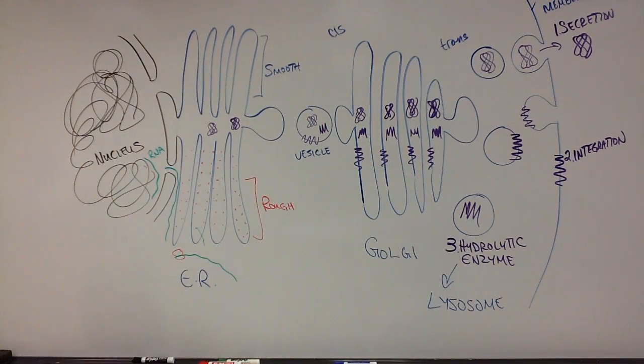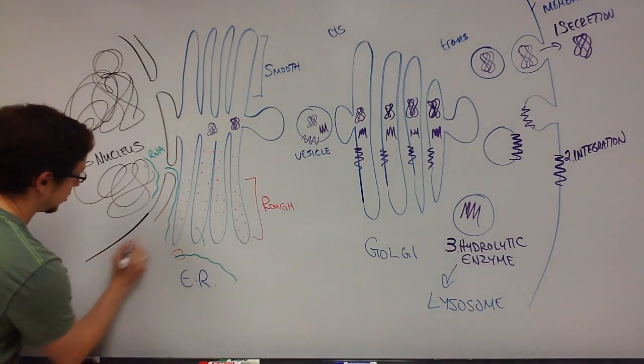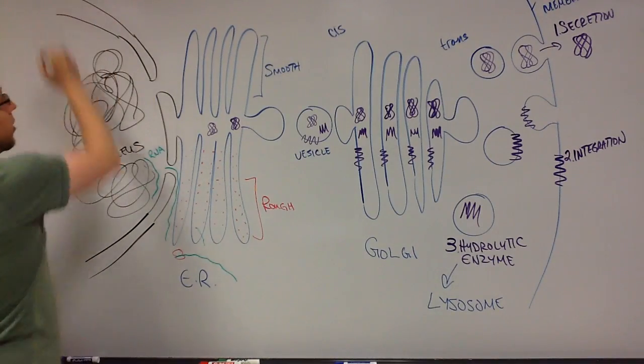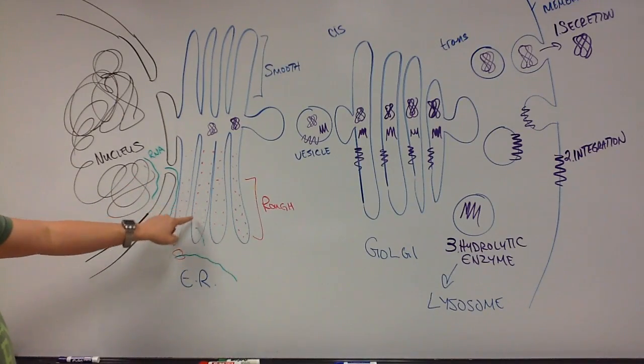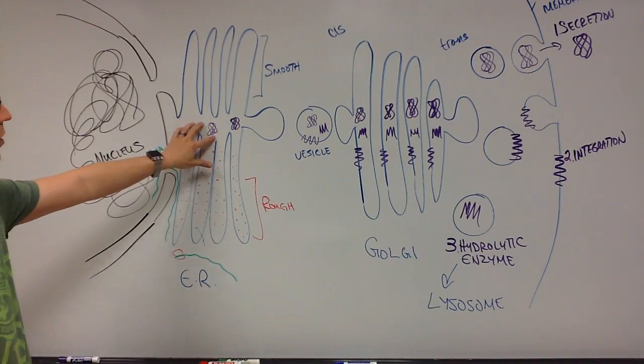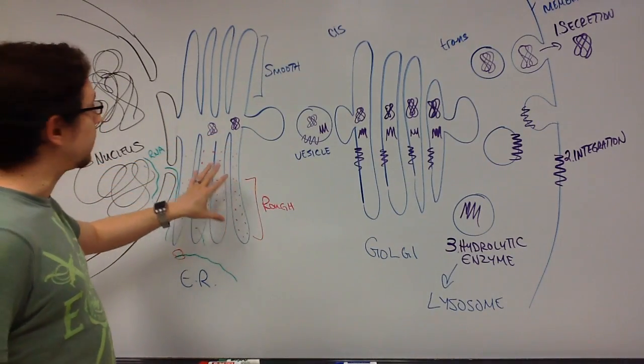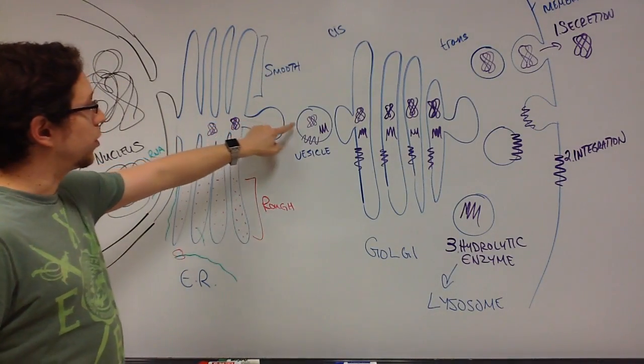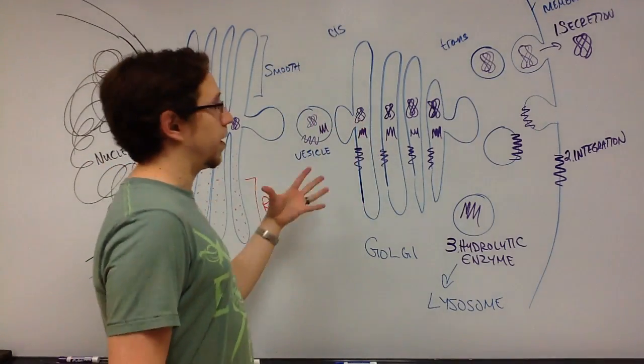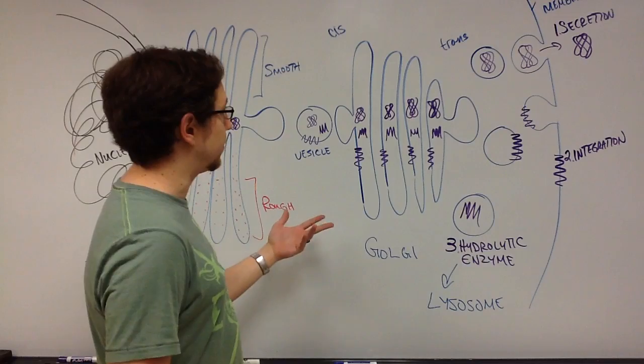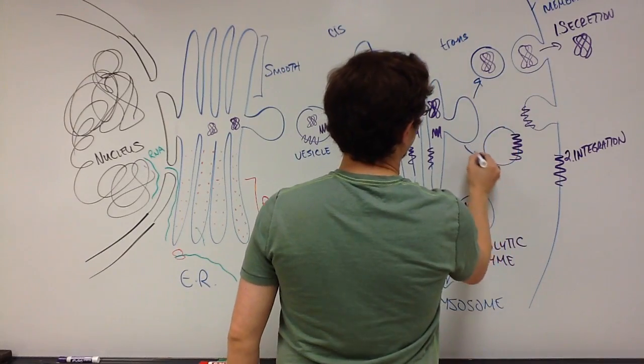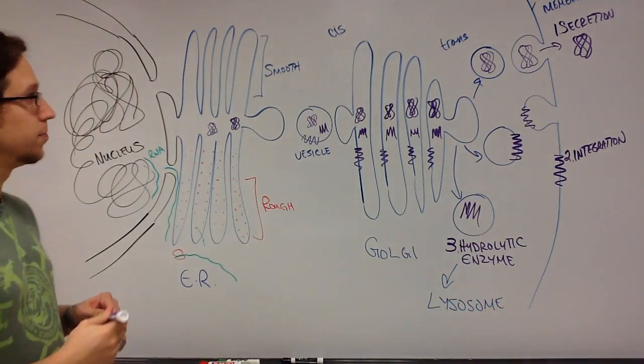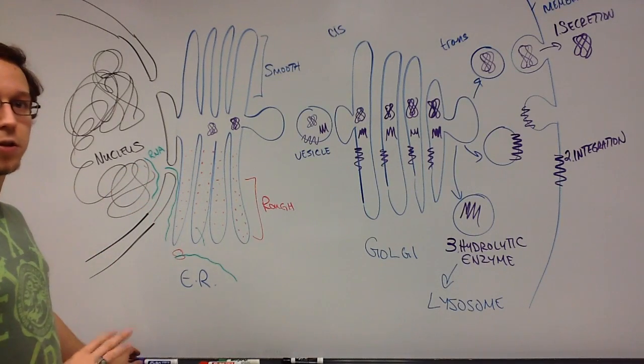This is the endomembrane system from start to finish. We start in the nucleus of the cell with the DNA and we make RNA off of that DNA. That RNA is translated into protein or polypeptides in the ER, specifically the rough ER. It's transported via vesicles to the Golgi where it is modified to functional polypeptide. Then it is transported out of the Golgi in vesicles where it undergoes one of three different fates.